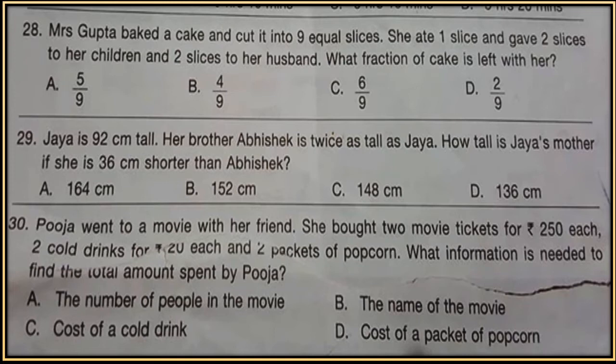The options are: the number of people in the movie, the name of the movie, cost of a cold drink, or cost of a packet of popcorn. Check out your solutions at the end of the video.